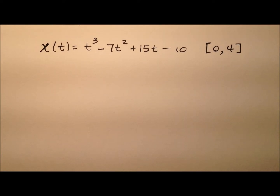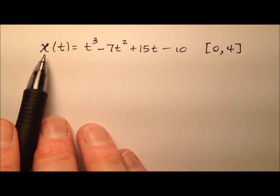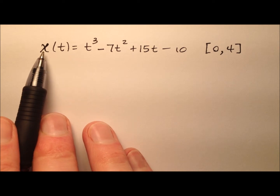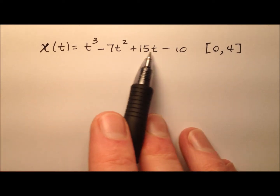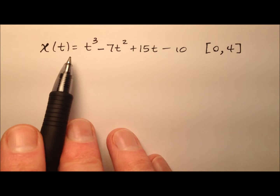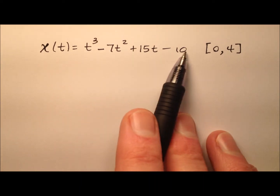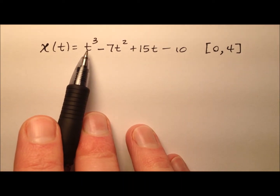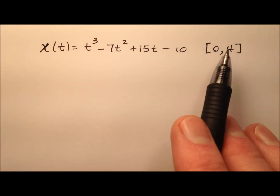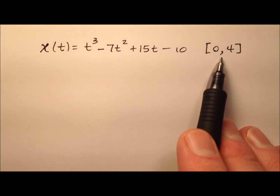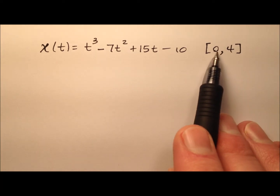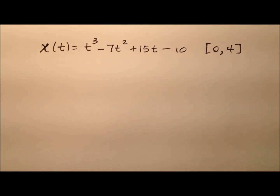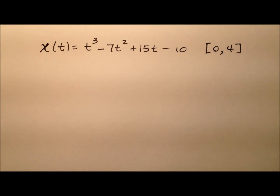In this example, we have a particle moving along the x-axis. We have a function x of t that models the position of our particle on that x-axis at any time t. For this problem, t is measured in seconds, and the interval we're going to work with is from t equals 0 to t equals 4. We'd like to determine the intervals on which the particle is speeding up and the intervals on which the particle is slowing down.